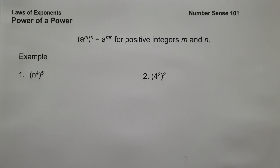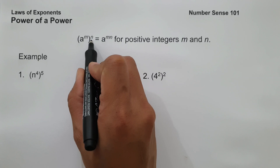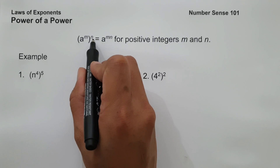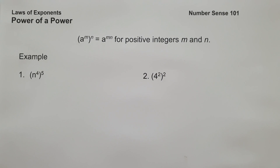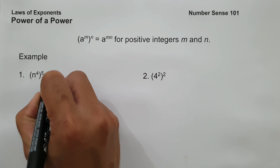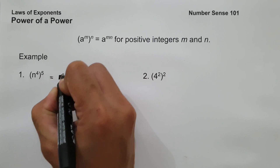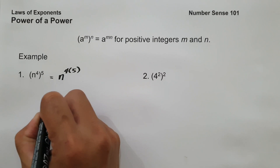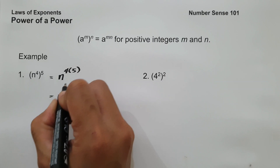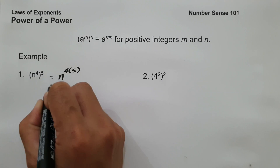Next, we have power of a power. When we say power of a power, if we have a raised to m, raised to n, where a is a base and m and n are exponents, it will give us a raised to mn for positive integers m and n. On example number one, we have n raised to 4, raised to 5. To simplify, we multiply 4 times 5, giving us n raised to 20. And this will be our answer.